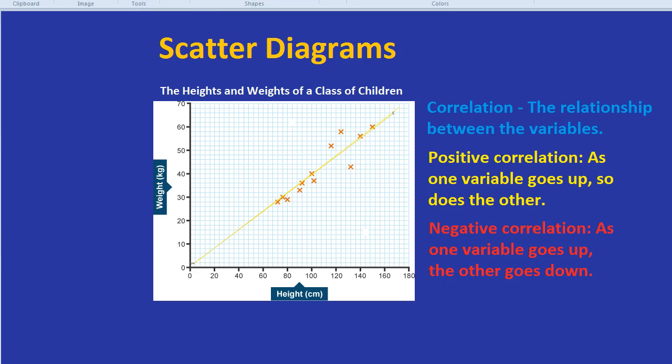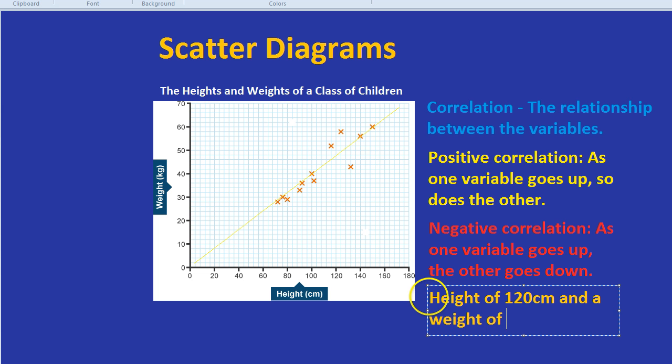We can also put on new values. If we're told that there was one class member not represented on this diagram that we need to fill in, we can use the grid to fill that student in. For example, if that student had a height of 120 centimeters and a weight of 50 kilograms, put him on the diagram.